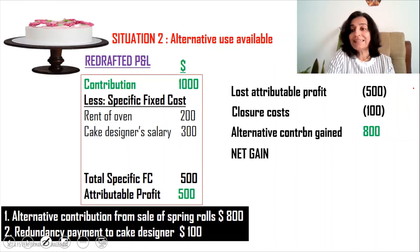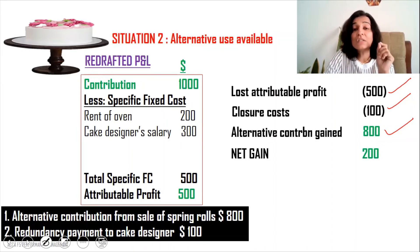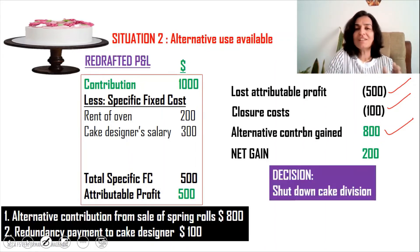The net gain if we close the cake division and open the spring roll division is: $800 minus $100 minus $500, giving a net gain of $200. So it is better to close down the cake division. The final decision is to shut down the cake division.